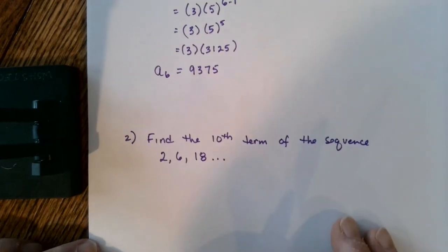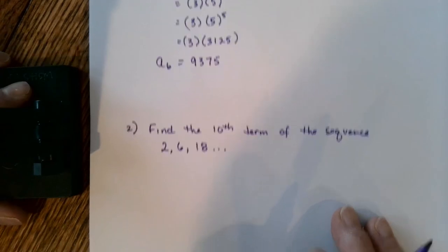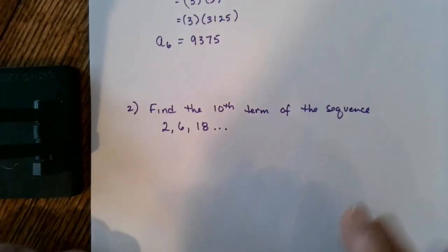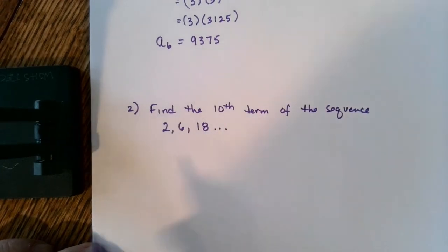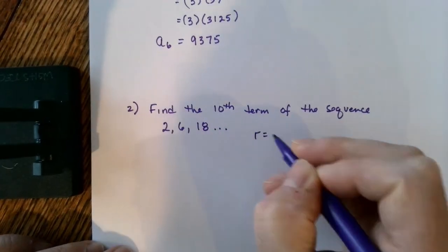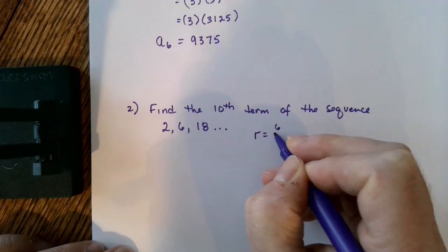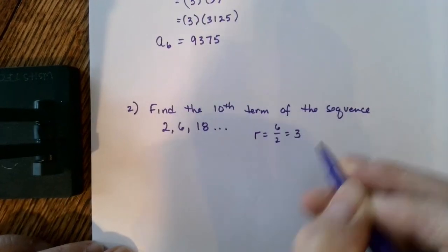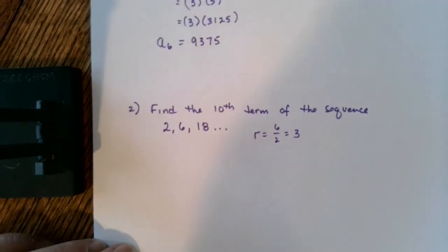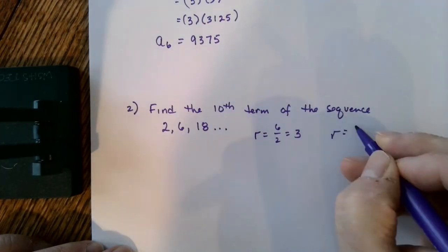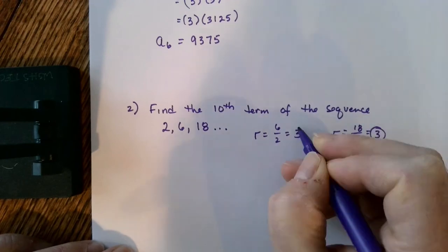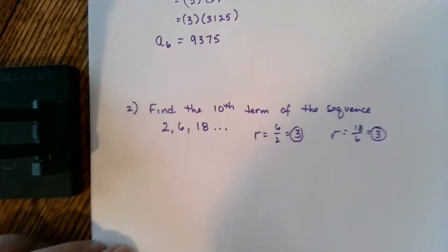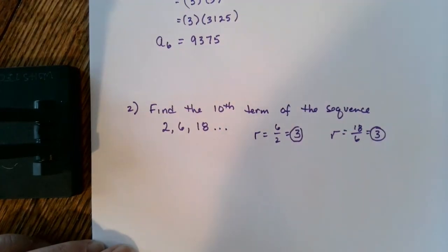Another way that this information can be presented to you is in this form here. Find the 10th term of the sequence 2, 6, 18. Again, to determine if this is geometric, I could simply take the 6 and divide it by 2. I notice it's got a value of 3. And if I took the 18 and divided it by 6, I also have a value of 3. So therefore, my r value or my common ratio is 3. Therefore this is in fact a geometric sequence.